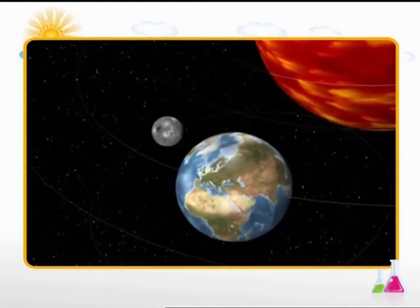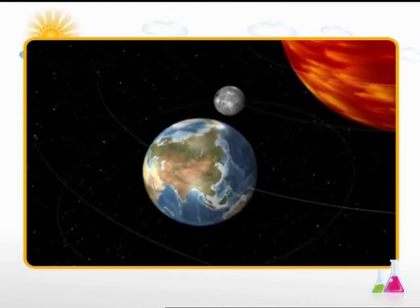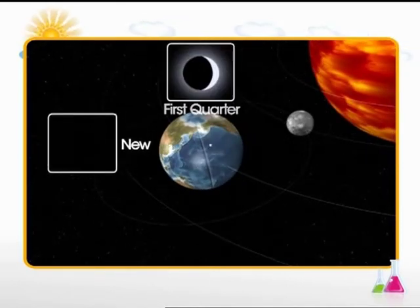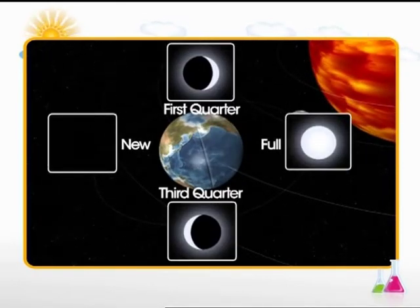These shapes are called phases of the moon. In a lunar month, the moon goes from one new moon to the next new moon.